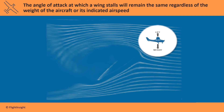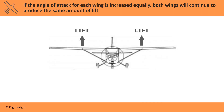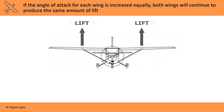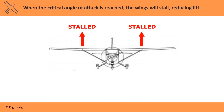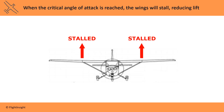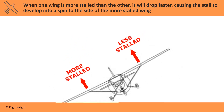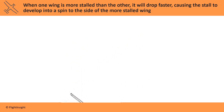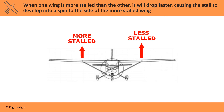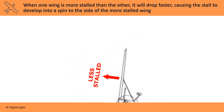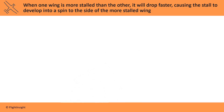The angle of attack at which a wing stalls will remain the same regardless of the weight of the aircraft or its indicated airspeed. In flight, if the angle of attack for each wing is increased equally, both wings will continue to produce the same amount of lift. When the critical angle of attack is reached, the wings will stall, reducing lift and causing the aircraft to drop. When one wing is more stalled than the other, it will drop faster, causing the aircraft to rotate in the direction of that wing, and the stall will develop into a spin to that side. For a spin to occur, both wings must be stalled. One wing may stall first, but in a spin, both wings will eventually stall.